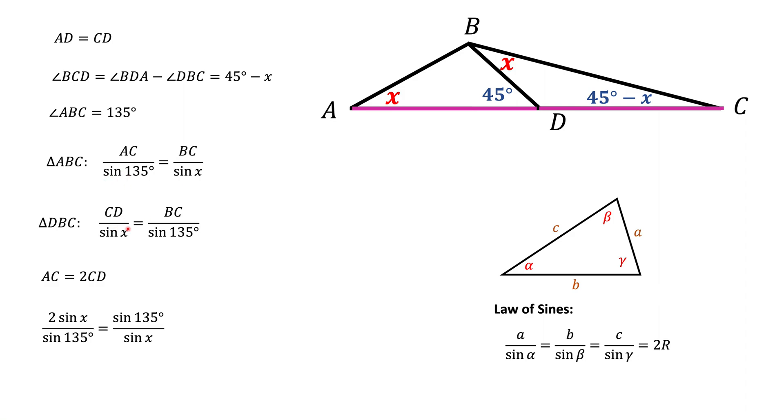So if we divide first by second equation this is what we're going to get. Now we're going to multiply both parts of this equation by both denominators and this is what we're going to get.